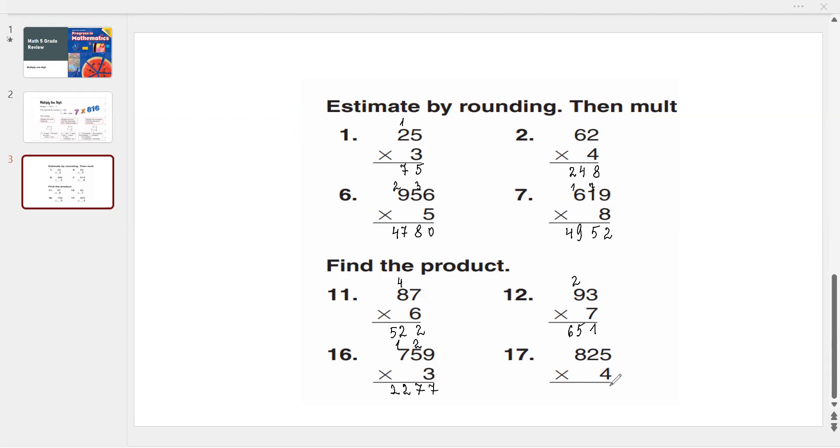825 times 4. 4 times 5 is 20: write 0, and 2. 4 times 2 is 8, plus 2 is 10: we write 0, and 1. 4 times 8 is 32, plus 1 is 33.